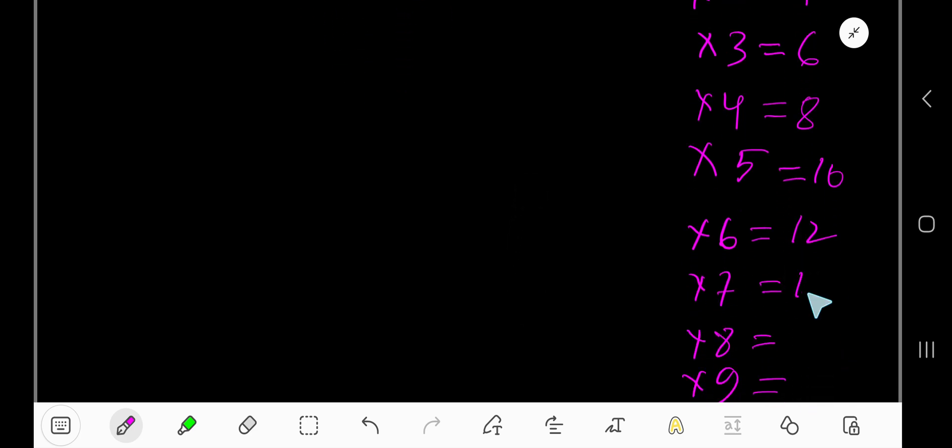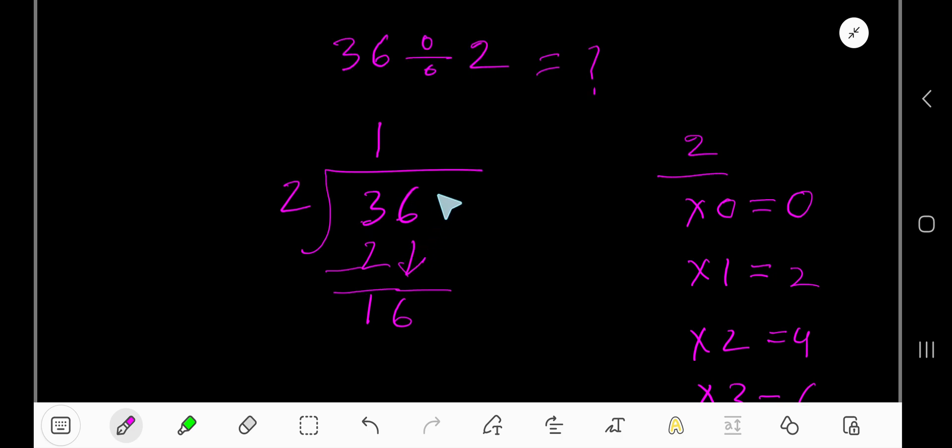12, then 14, 16. That is 8 times. 8 times 2 equals 16. If you subtract, you are getting 0. 18 is the answer. 36 divided by 2 equals 18.